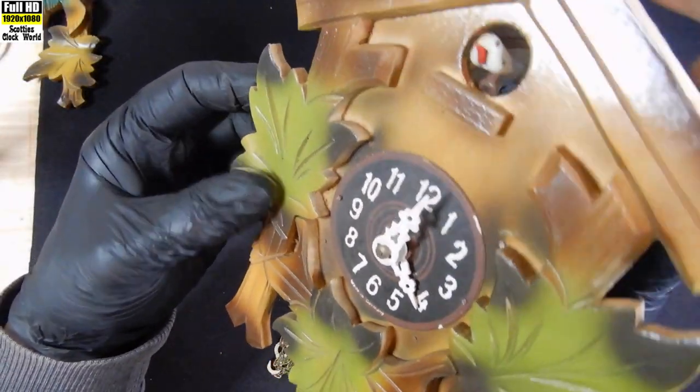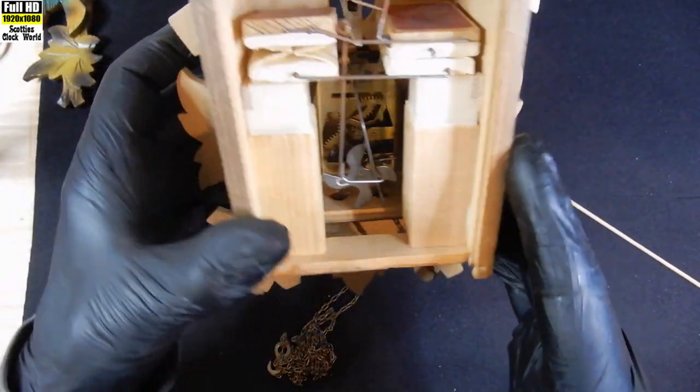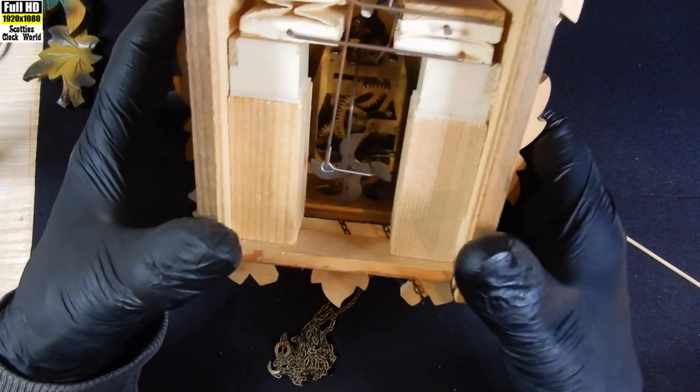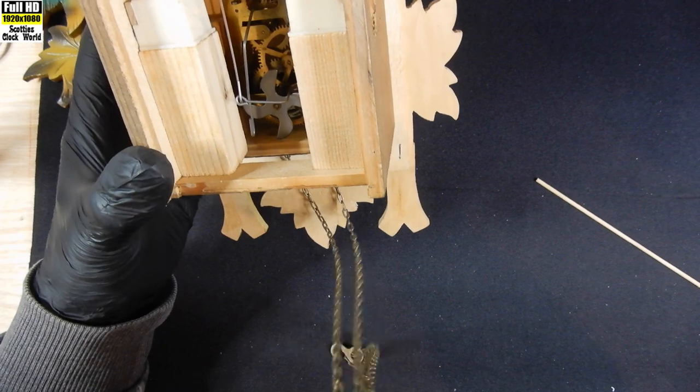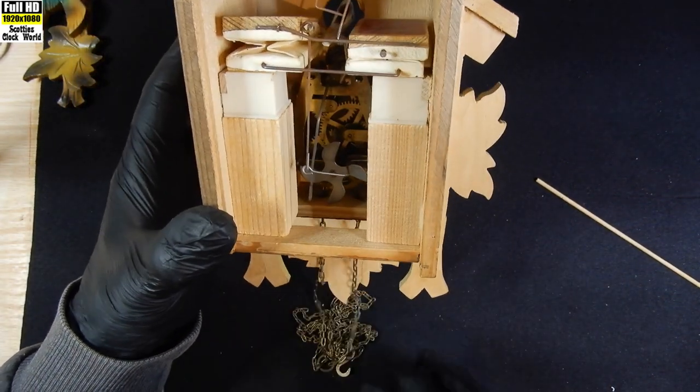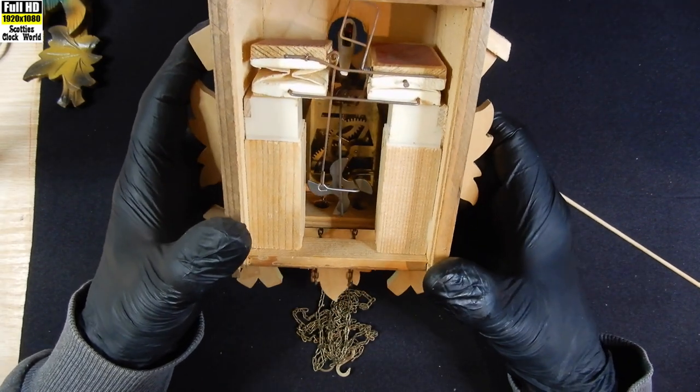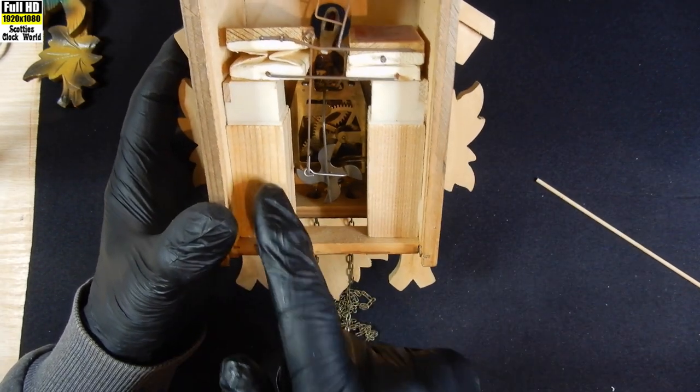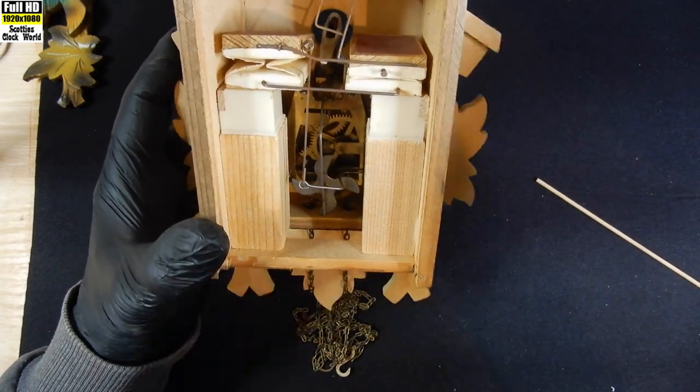So it's not in too bad a condition for a cheap little clock. You'll notice there's no weights for the chain. So I've ordered some of those. They'll come in from Cousins in the UK. They should be here in a couple of weeks time. But in the meantime we're going to take the movement apart, check it, clean it, oil it, and get it running again.